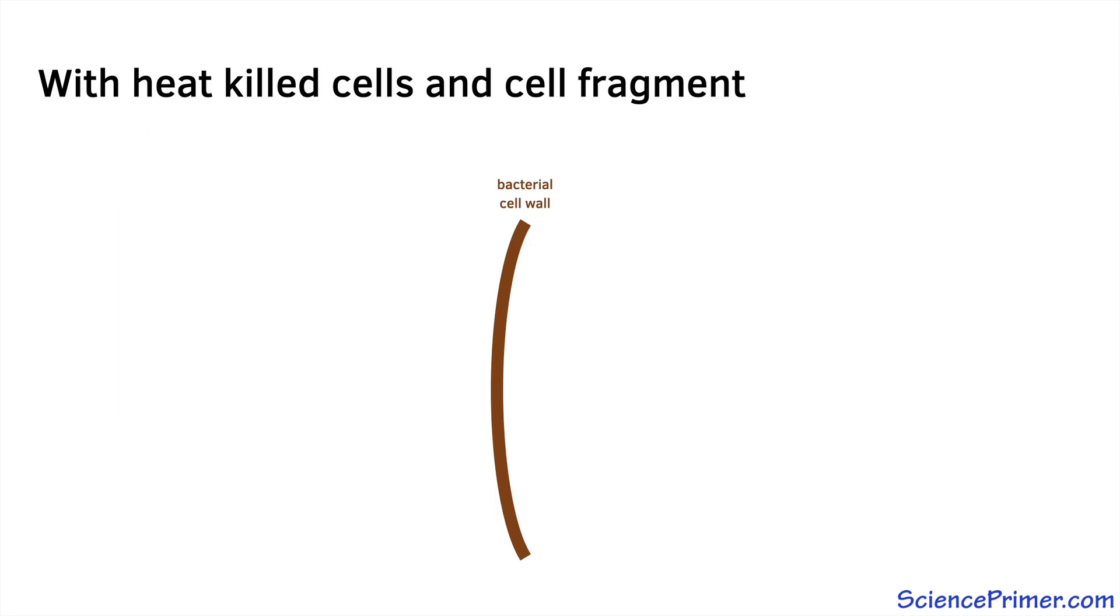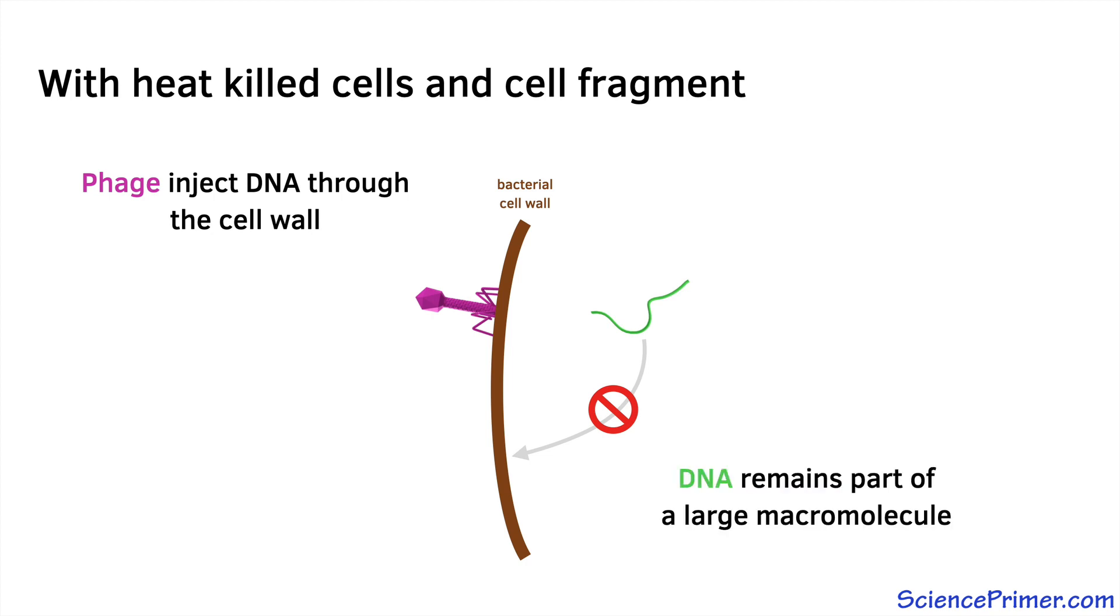While the outer protein coat could be precipitated using antibodies against phage protein, they then performed a series of experiments with heat-killed bacterial cells and bacterial cell fragments that showed that phage appeared to inject DNA through the cell wall. Once introduced into the cell, the DNA did not leak back out, suggesting that the DNA was not degraded once it entered the cell, and therefore likely remained part of larger macromolecules.